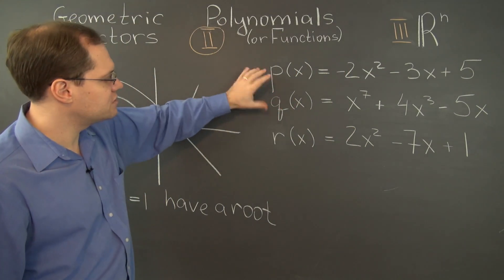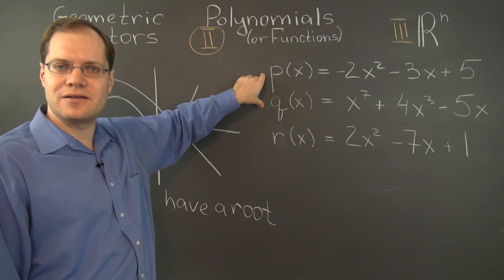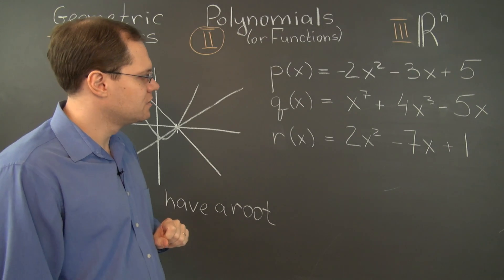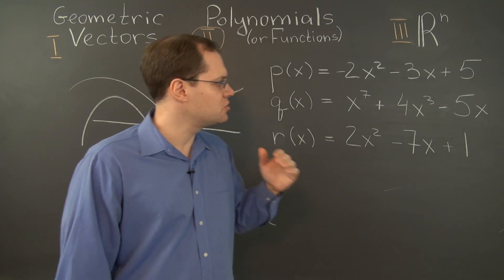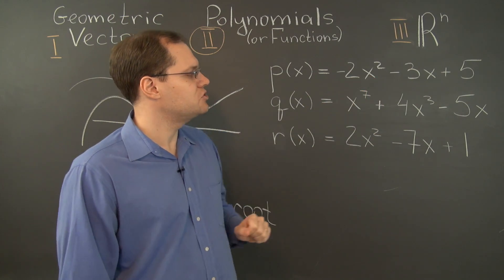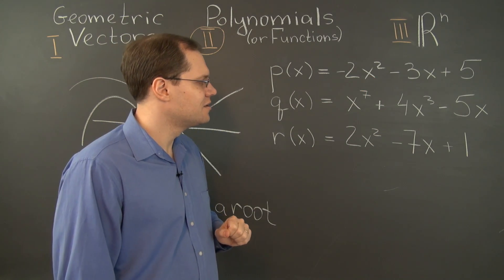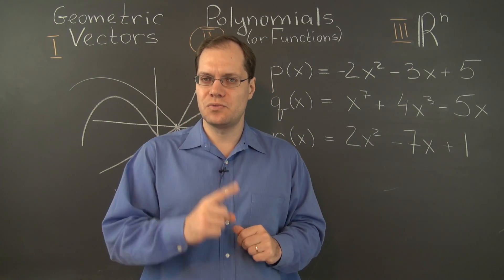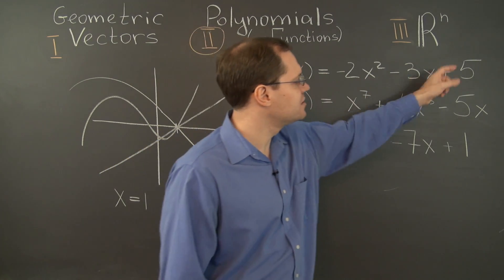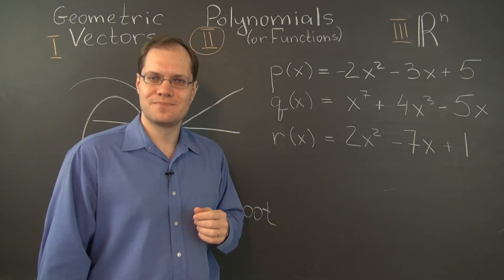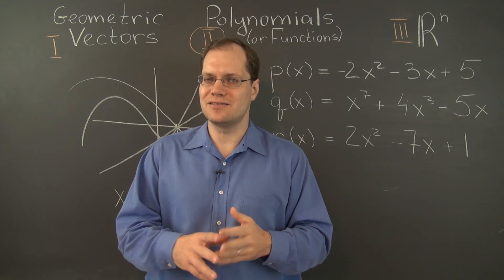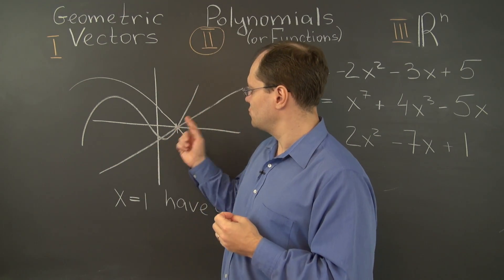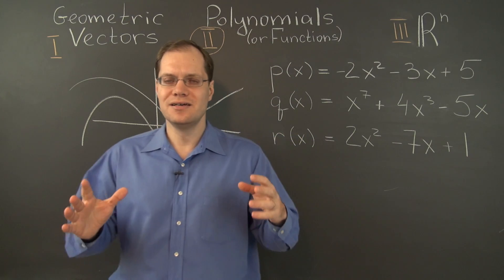And you will notice that the first two of these polynomials satisfy that property. If you plug in x equals one, then these polynomials will evaluate to zero. So x equals one is a root for each one of these polynomials. There's actually another synonymous way to describe that property. Having a root at x equals one is equivalent to the coefficients adding up to zero. So we could say one of three synonymous things. Coefficients add up to zero, x equals one is a root, or polynomial passes through this point. All of these things say the same thing.